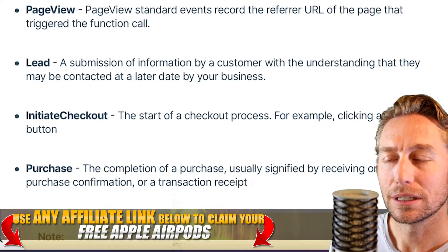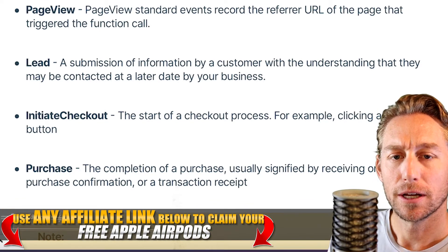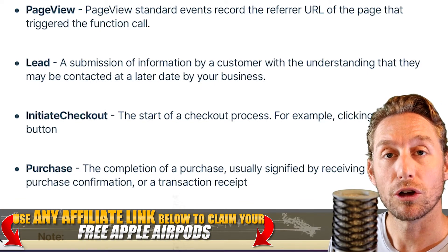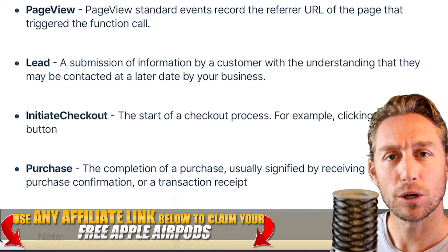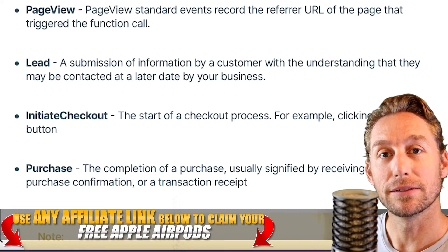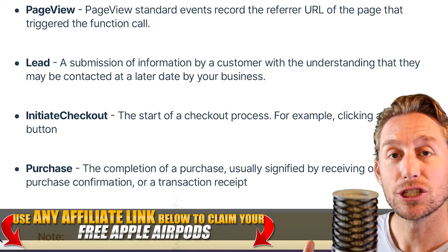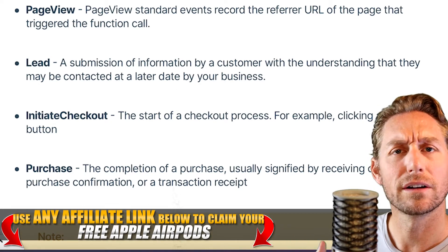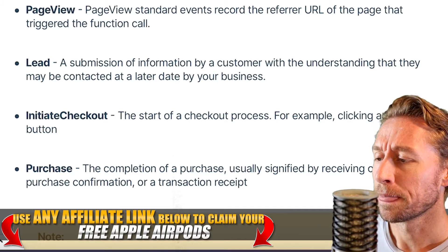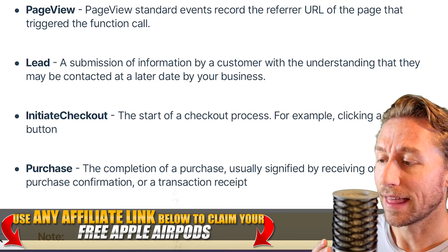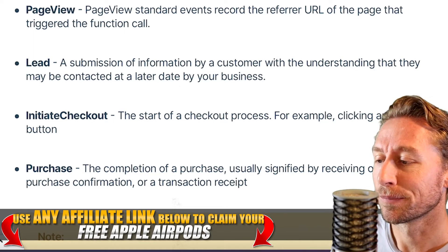Then there's a lead. A lead is essentially a prospect — someone who's interested in what you're offering. It's called an ethical bribe. You can create an opt-in form and give a gift, maybe something digital or a PDF, in exchange for a phone number, address, or email address. That person, through an indoctrination process, can actually become a customer.